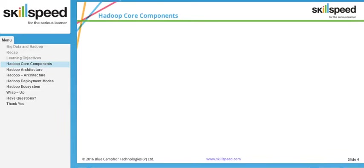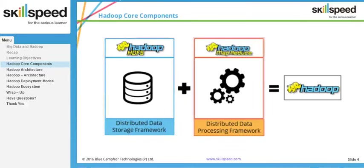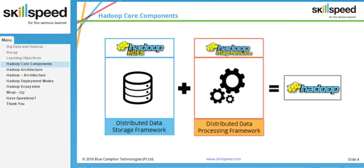If you look at Hadoop from an architectural point of view, you can see that there are two major parts of Hadoop. There is something called HDFS, or the Hadoop Distributed File System, which is primarily responsible for storing the data. The second part is called MapReduce, which is responsible for processing the data. In a nutshell, you can say that Hadoop equals storage plus processing.